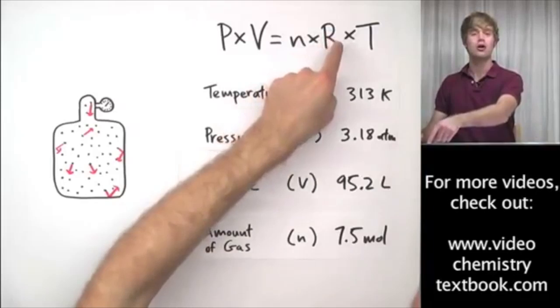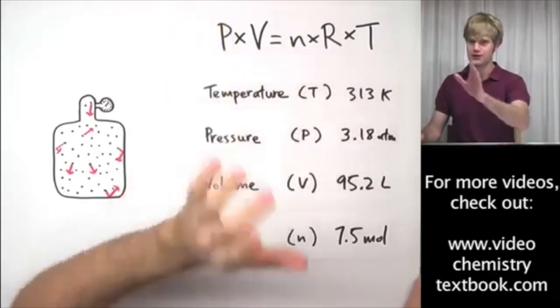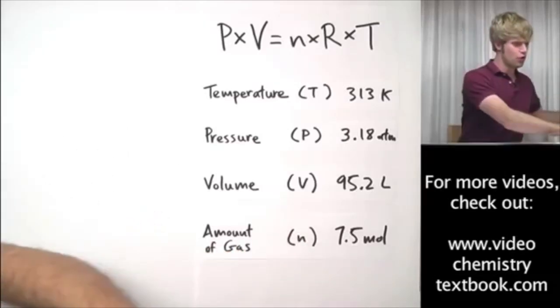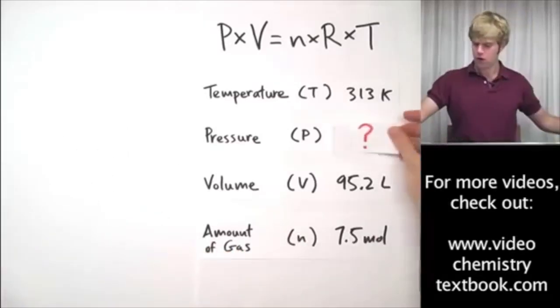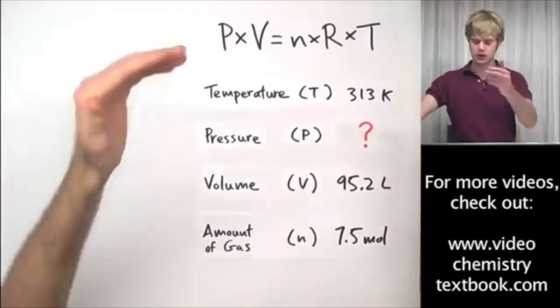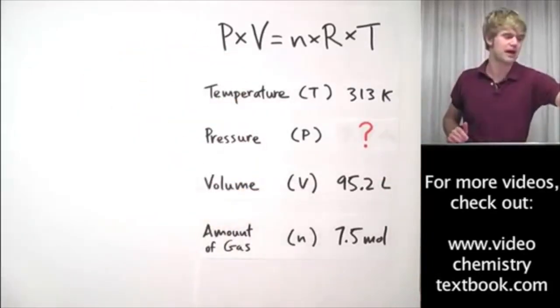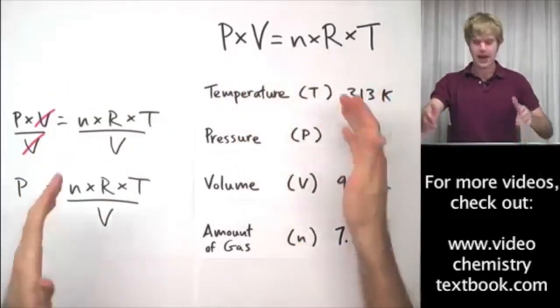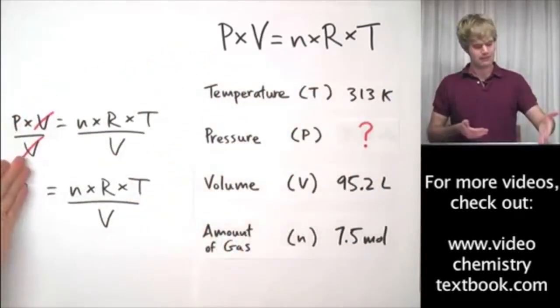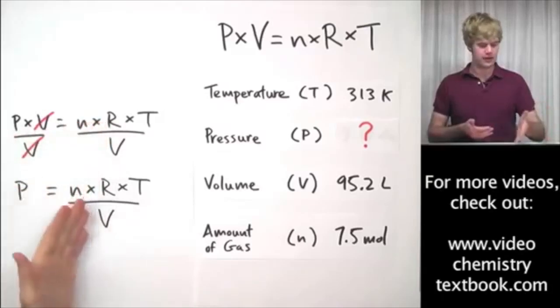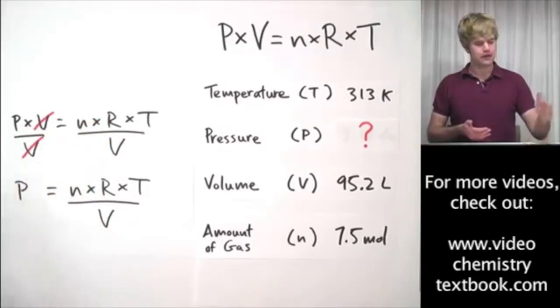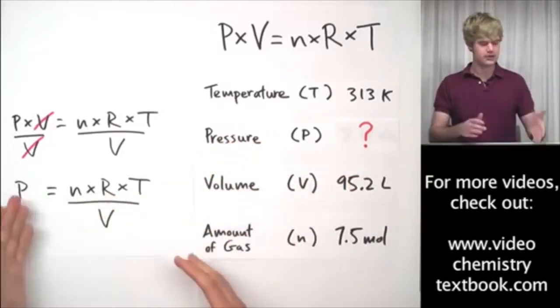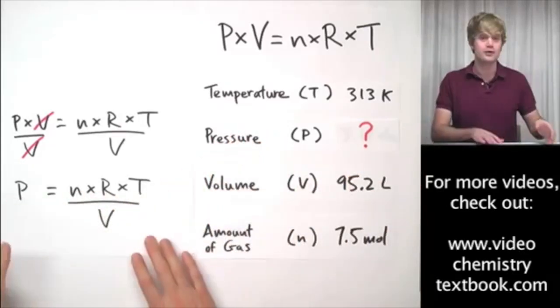I'll get to R in a second. Don't worry about it for right now, it's going to be a number that we know. So let's say, for example, that we didn't know what pressure was, but we still knew the temperature, volume, and the amount of gas. No big deal. We could take the equation PV equals NRT and rearrange it, divide both sides by V, get rid of the V, and then we'd have P equals NRT divided by V, plug these values in, and we could figure out what the pressure was.